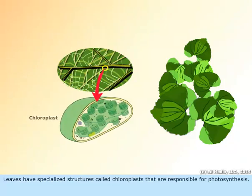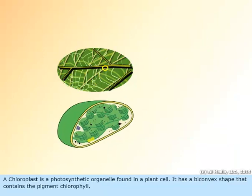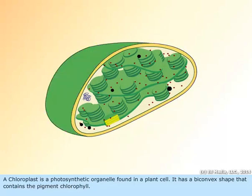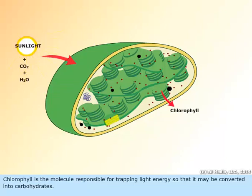Leaves have specialized structures called chloroplasts that are responsible for photosynthesis. A chloroplast is a photosynthetic organelle found in a plant cell. It has a biconvex shape that contains the pigment chlorophyll. Chlorophyll is the molecule responsible for trapping light energy so that it may be converted into carbohydrates.